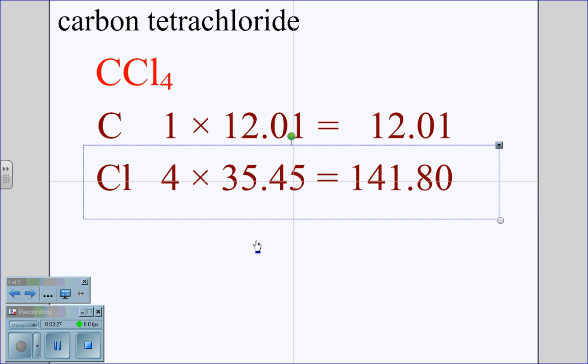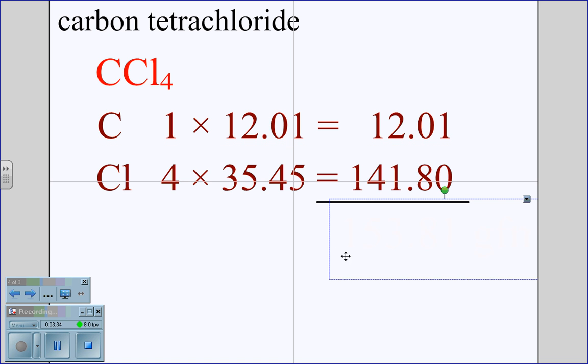When we do the multiplication, we get 12.01 and 141.80. And this gives us a value, when we add the values together, of 153.81 for the gram formula mass of carbon tetrachloride.